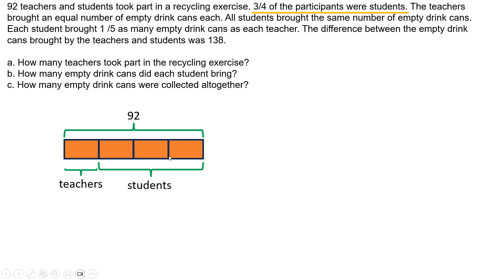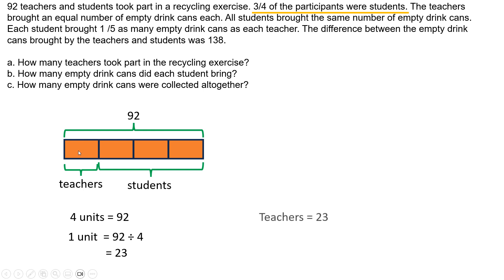Whereas teachers form 1 unit here. Looking at this diagram we can easily see that 4 units is equal to 92. So 1 unit is equal to 92 divided by 4, which is equal to 23. So now we found out that 1 unit is 23. That tells us that teachers equals 1 unit, which is 23, whereas students equals 3 units, so that is 3 times 23 which is equal to 69.